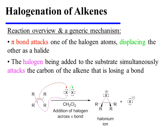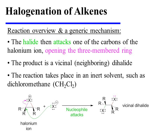Notice that the halogen has a formal positive charge in this cyclic intermediate. The halide that was previously displaced then attacks one of the two carbons of the halonium ion, opening the three-membered ring.